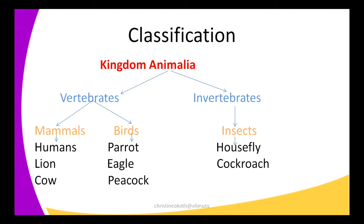By classifying them, all these organisms belong to the big kingdom we call Animalia, because all of them are animals and not plants. They cannot make their own food and they do not have the green coloring in plants we call chlorophyll. This is one thing that makes them to be classified under the kingdom Animalia.